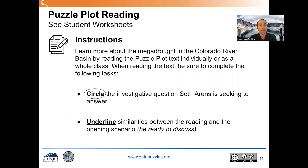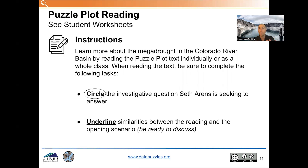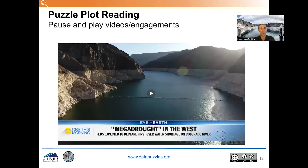For this data puzzle and others, the puzzle plot reading challenges students to learn more about the mega drought in the Colorado River basin introduced in part one by reading a puzzle plot text. When students are reading, we want them to circle the investigative question that Seth is seeking to answer and underline any similarities they see between the reading and the opening scenario, and be ready to discuss those similarities.